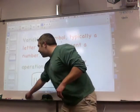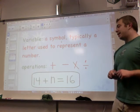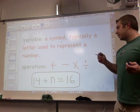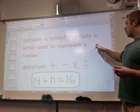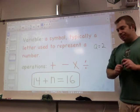Okay, a variable is a symbol, typically a letter, used to represent a number. For example, the letter Q could really mean two. They rhyme, Q and two.